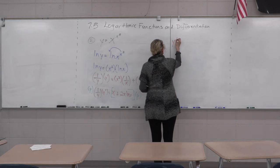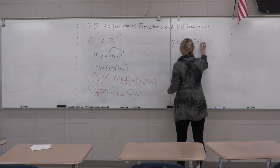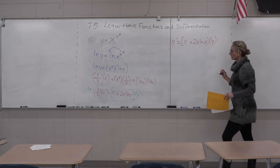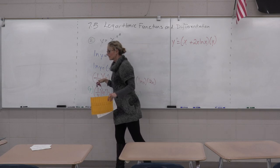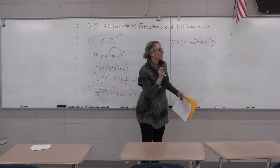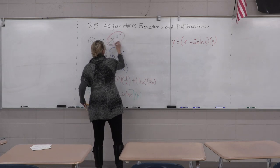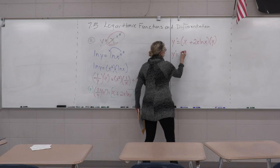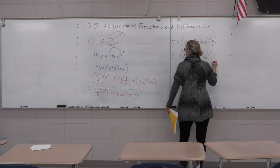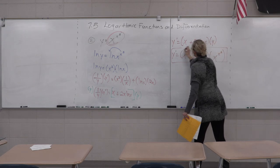Multiply both sides by y to isolate y prime. Substitute y back in: y prime equals the quantity x plus two x times the natural log of x, times x to the x squared. That's the final explicit answer.